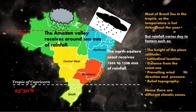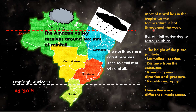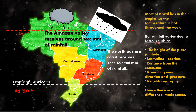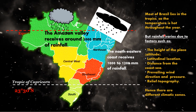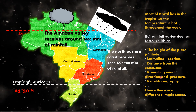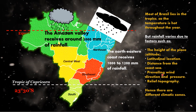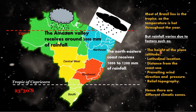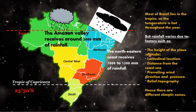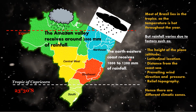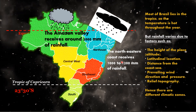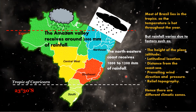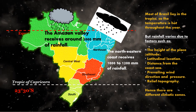Almost 90 percent of Brazil lies in the tropical zone, so the climate is hot throughout the year, but rainfall varies across Brazil due to several factors. Because rainfall varies in different areas, there are different climatic zones in Brazil. The rainfall varies because of altitude, latitudinal location, distance from the sea, prevailing wind pressure — that is, the northeast and southeast trade winds — and the relief or topography of Brazil.